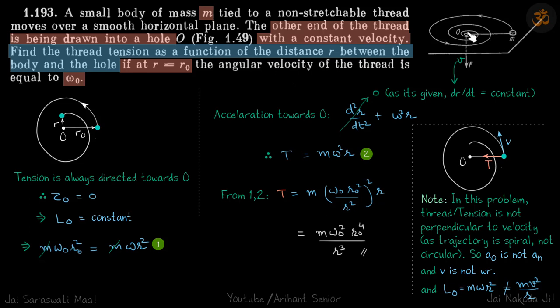We have a body that's tied to a thread and the thread is going inside the table and it's been pulled with a constant velocity v. We need to find the tension in the thread as a function of distance r between the body and the hole if initially it is at a distance r naught.